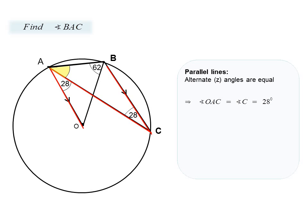We quickly move to finding the unknown angle, because this angle plus the 28-degree angle forms the base angle which we know to be 62 degrees. Therefore BAC is 34 degrees — simply subtract 28 from 62. This is a very straightforward application of theorems and an ideal example of using the approach of observing, looking for clues, and applying those clues to particular theorems.